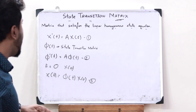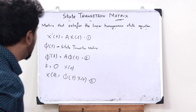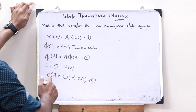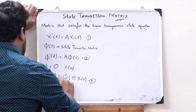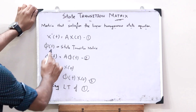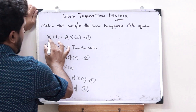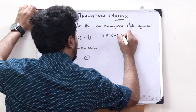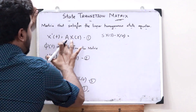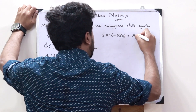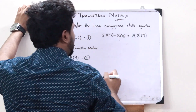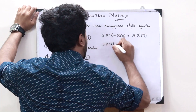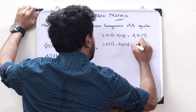For that, let us take the Laplace transform of equation number 1. Upon taking the Laplace transform of this particular equation, we would get: the Laplace transform of x'(t) is given as s·X(s) − x(0). This is equal to the Laplace transform of A·x(t), which is nothing but A·X(s). Let us take this X(s) here and x(0) over here, so we would get s·X(s) − A·X(s) = x(0).